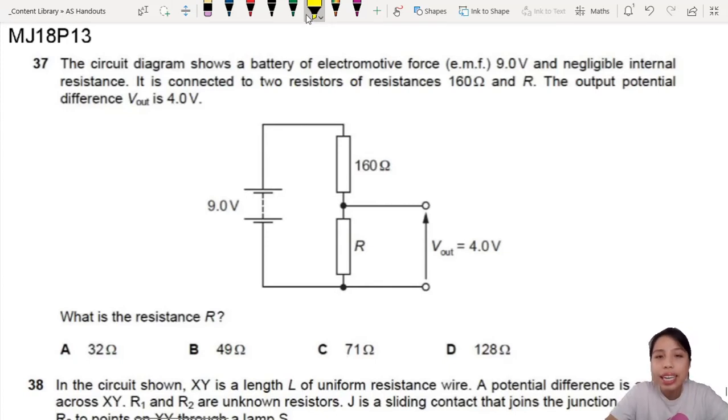So you have a battery of electromotive force 9 volts and negligible internal resistance. Now this is important - negligible internal resistance. We'll see what that means in a bit. But basically your battery has 9 volts, supplying 9 volts to the circuit.